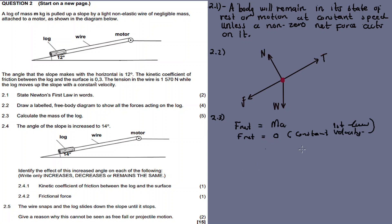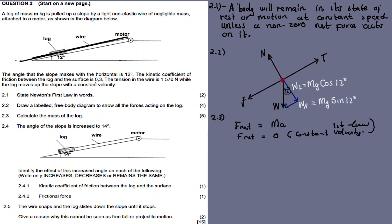We are on an incline, so the weight has two components: the parallel component and the perpendicular component. Since the object moves up the incline, we only consider forces in the direction of motion — parallel to the incline. The perpendicular direction has no motion so we don't consider it for F net. The forces parallel to the incline are: frictional force, weight parallel, and tension.